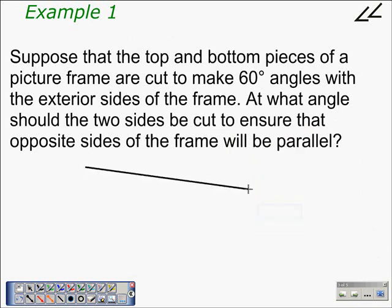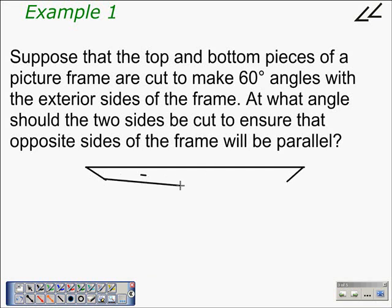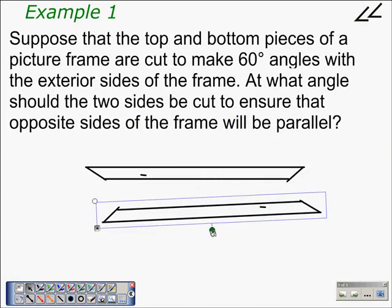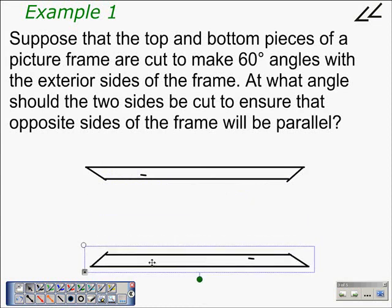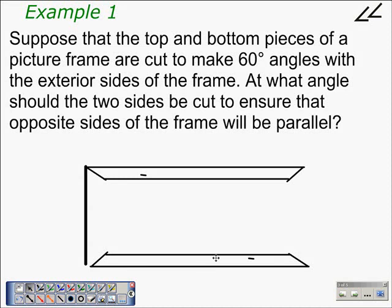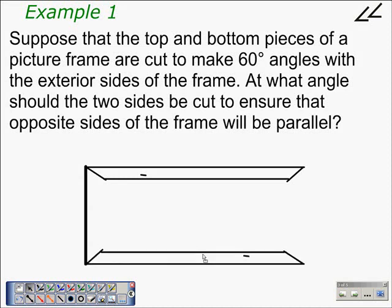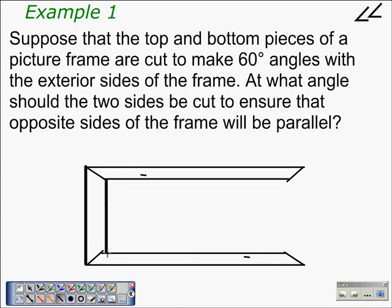We have the top of a picture frame and this angle right here has been cut at 60 degrees. And we would have that same piece along the bottom. What we need to do is find, here, an angle. These thicker pieces are representing the sides that we need to cut. And we need to find the angle we would need to cut these pieces.